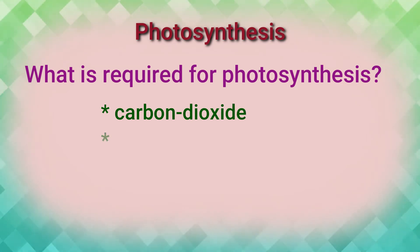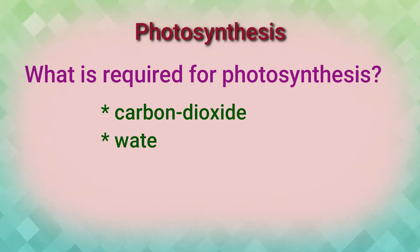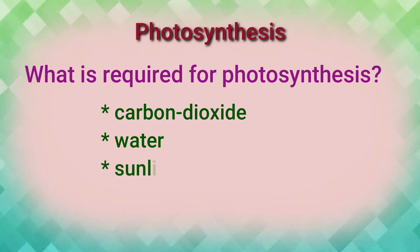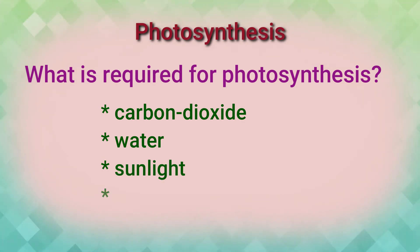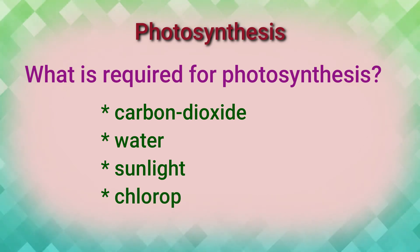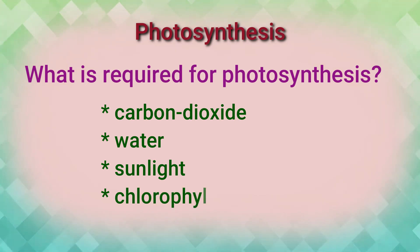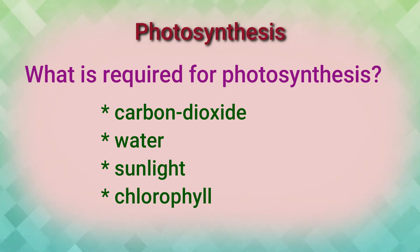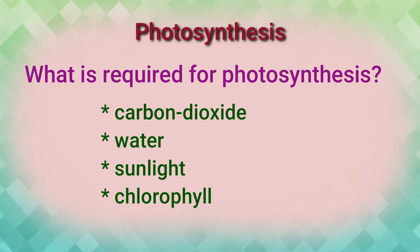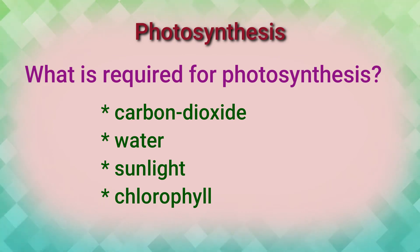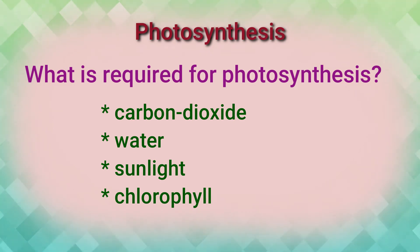What is required for photosynthesis? As we have seen in the definition, it needs carbon dioxide, water, sunlight, and chlorophyll. How do plants get these things and why are they important? We are going to see this one by one.